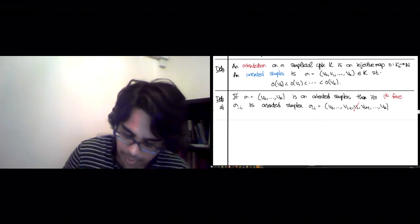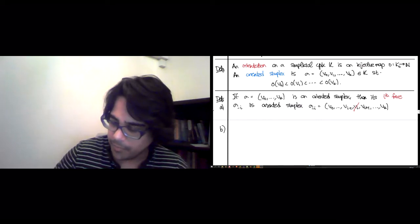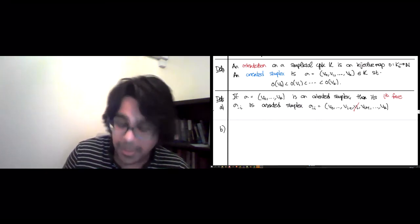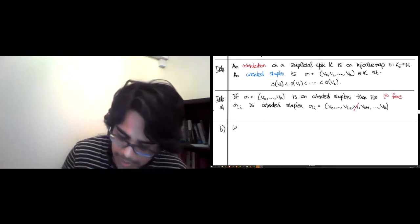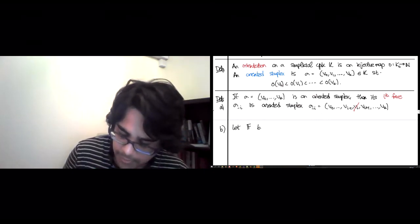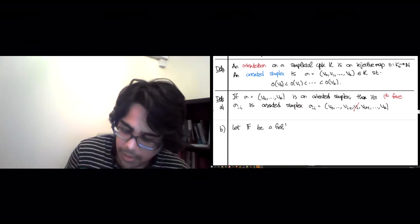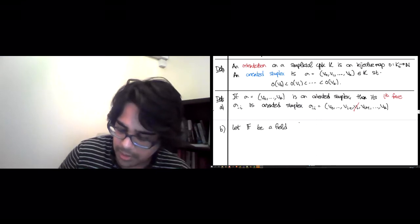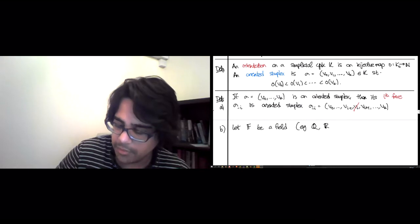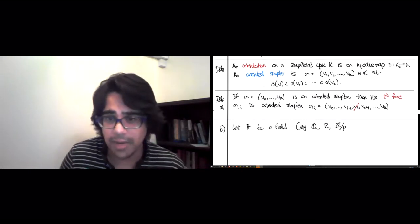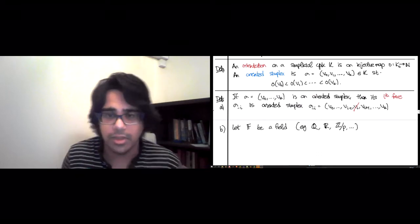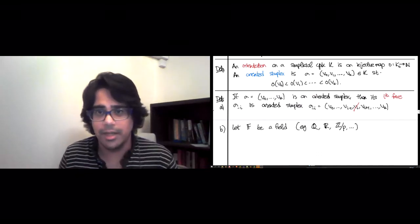So here is part B. The algebraic... so pick some place where you have coefficients. So let F be a field. Typical choices are the field of rational numbers, the field of real numbers, integers modulo prime power. I don't care which one, just pick your favorite field from abstract algebra.